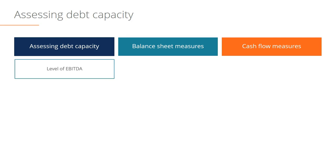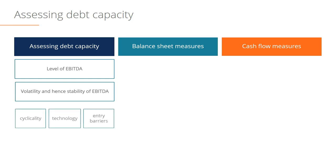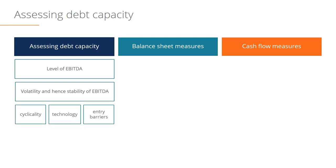In order to assess the level of debt capacity, we'll be looking at the EBITDA — and not just the level of EBITDA but the volatility, or rather stability, of that EBITDA. That's influenced by several things: industry cyclicality, technology, and barriers to entry being the three main measures of stabilizing EBITDA.